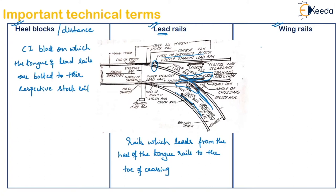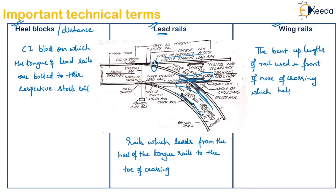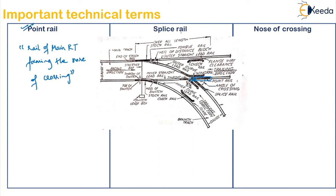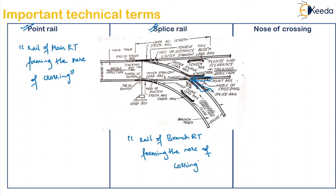The wing rail helps the train to properly go under the crossing. Next is the point rail — the rail of the main track forming the nose of crossing is called the point rail. Then is the splice rail — the rail of the branch railway track forming the nose of crossing. So if it is a part of the main rail it is called the point rail, and if it is a part of the branch rail it is called the splice rail.